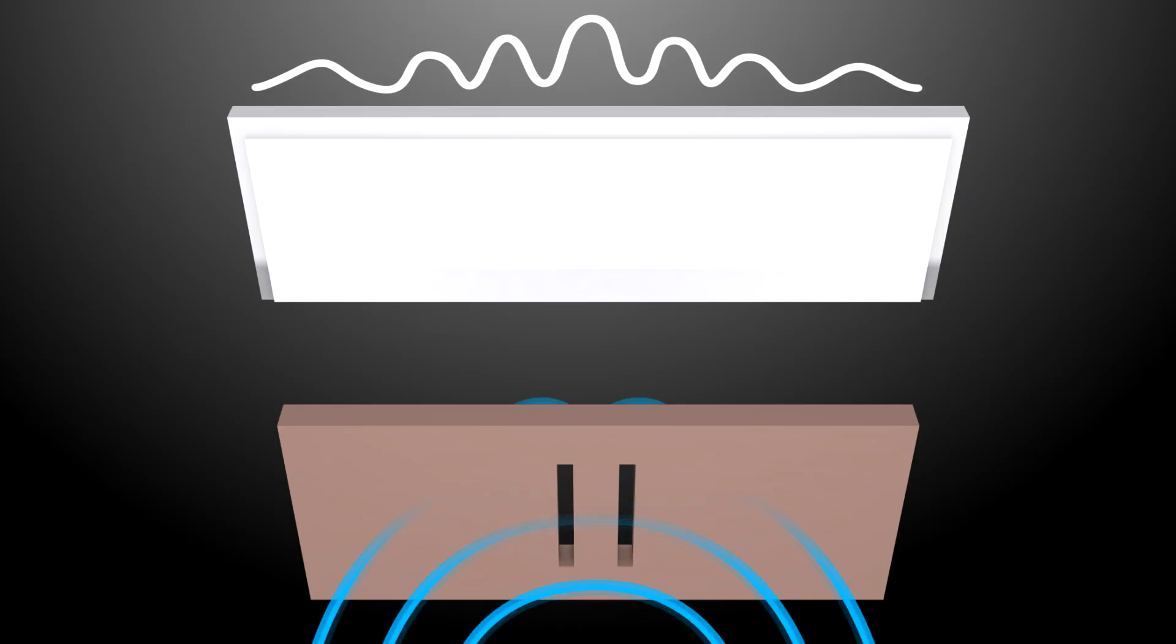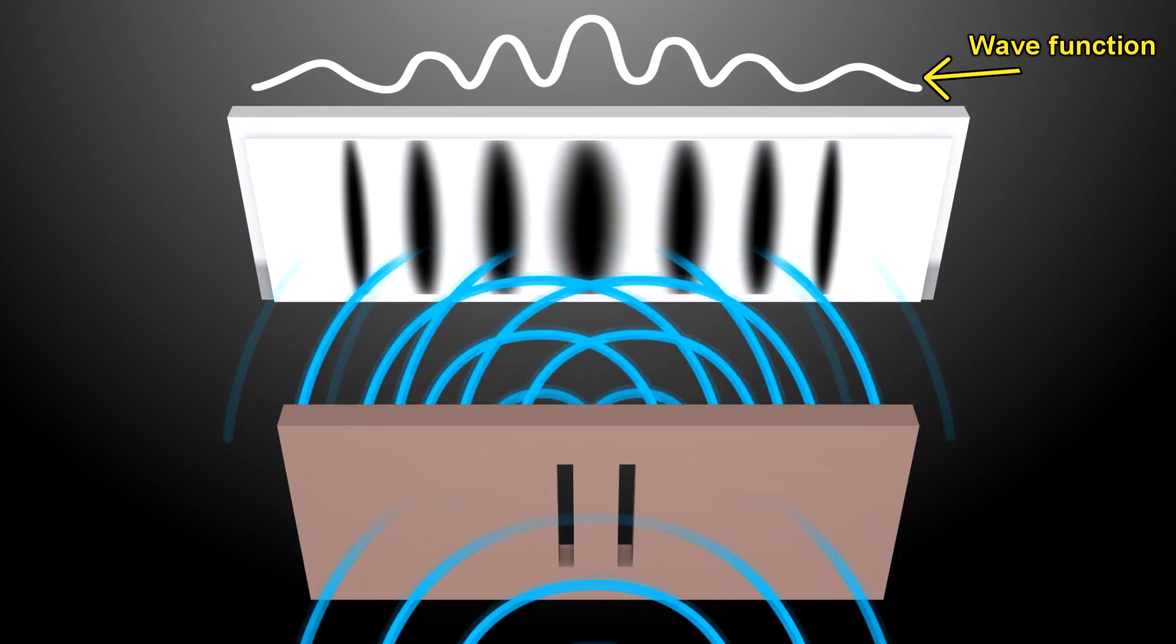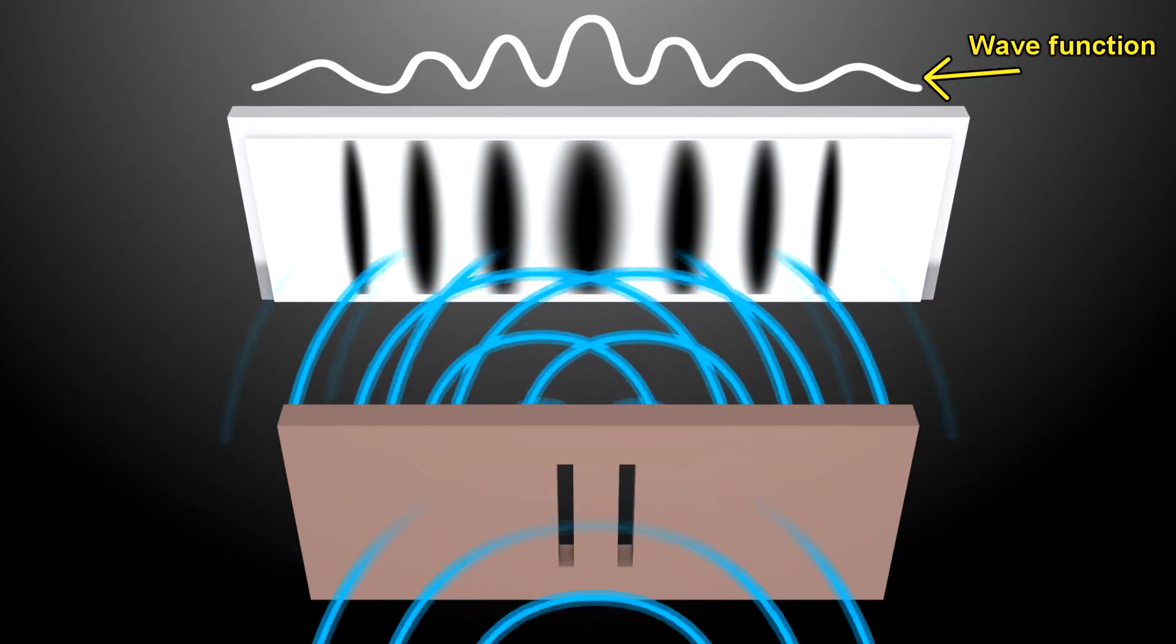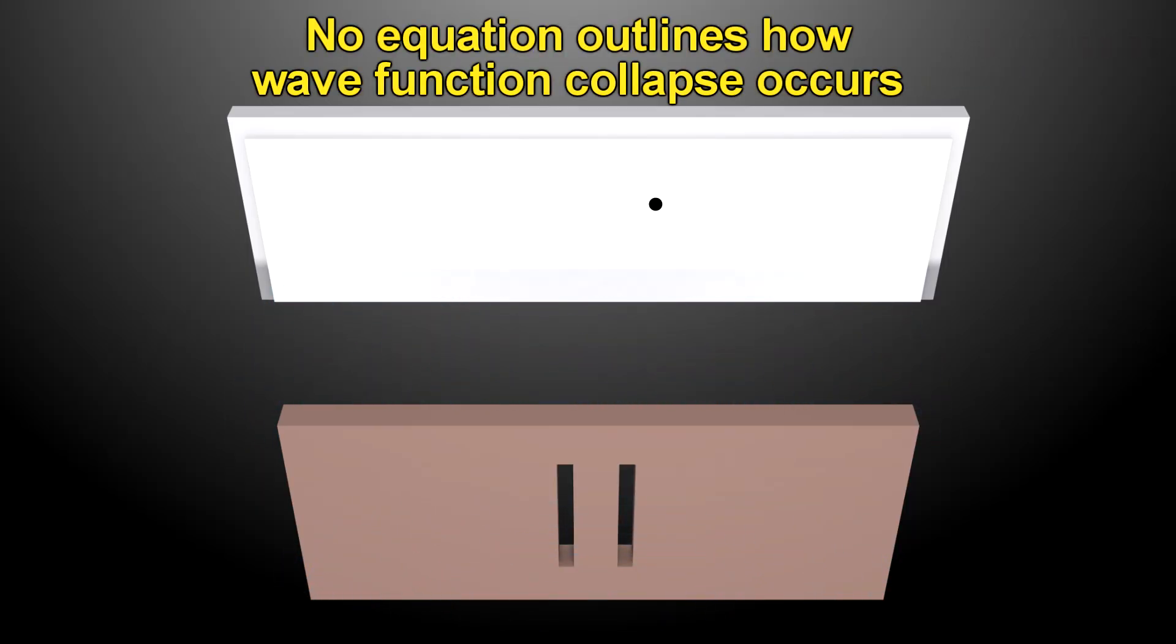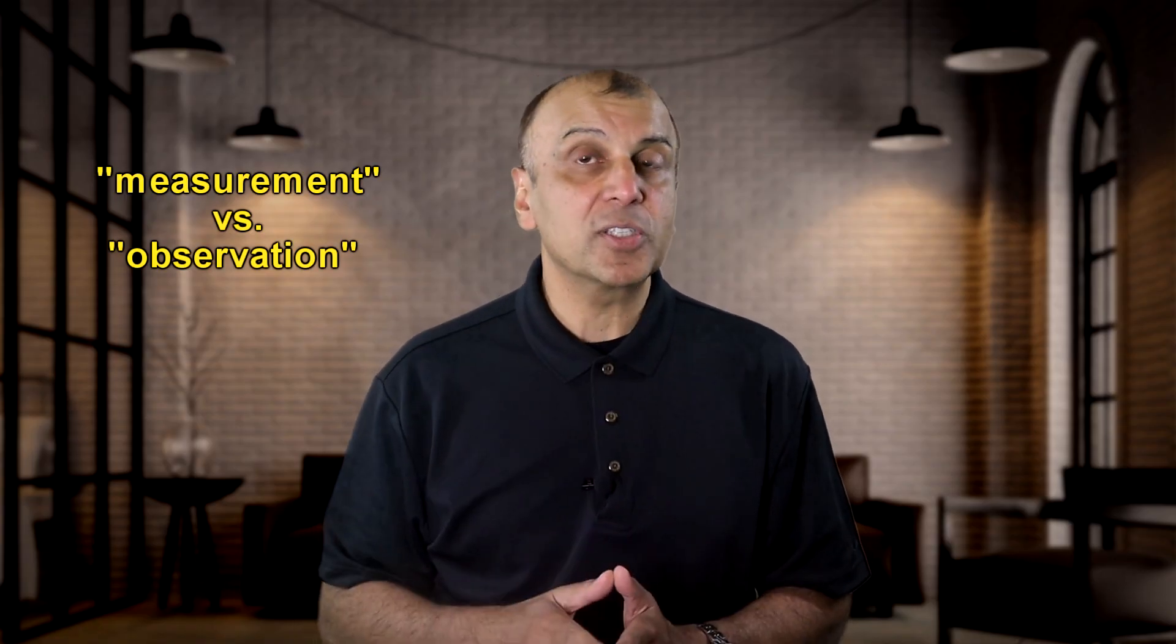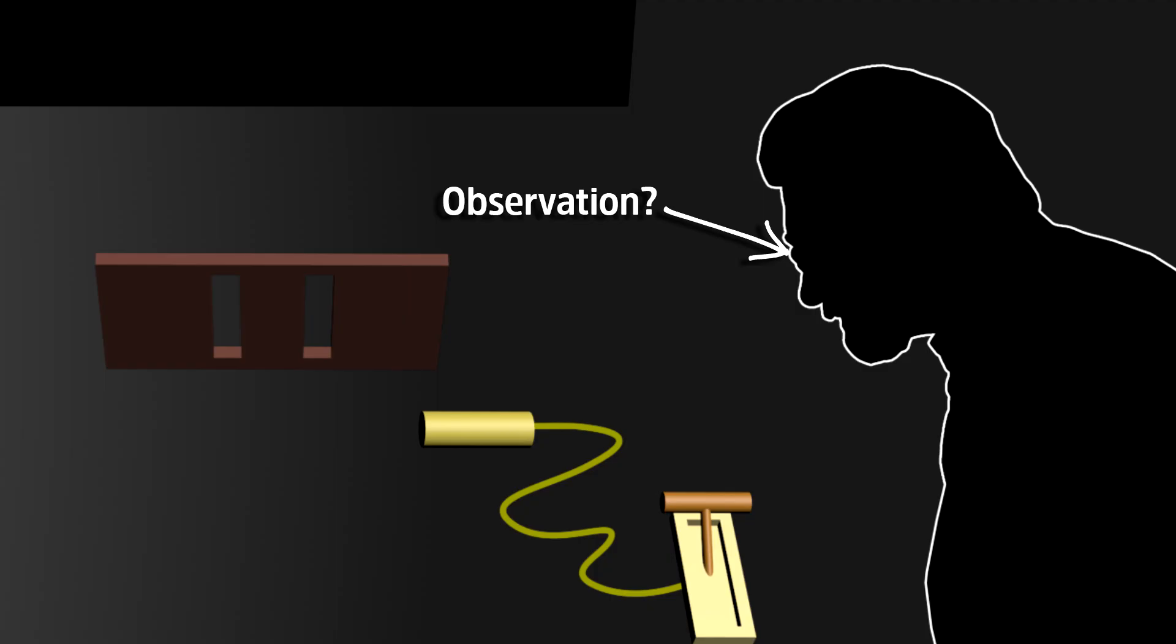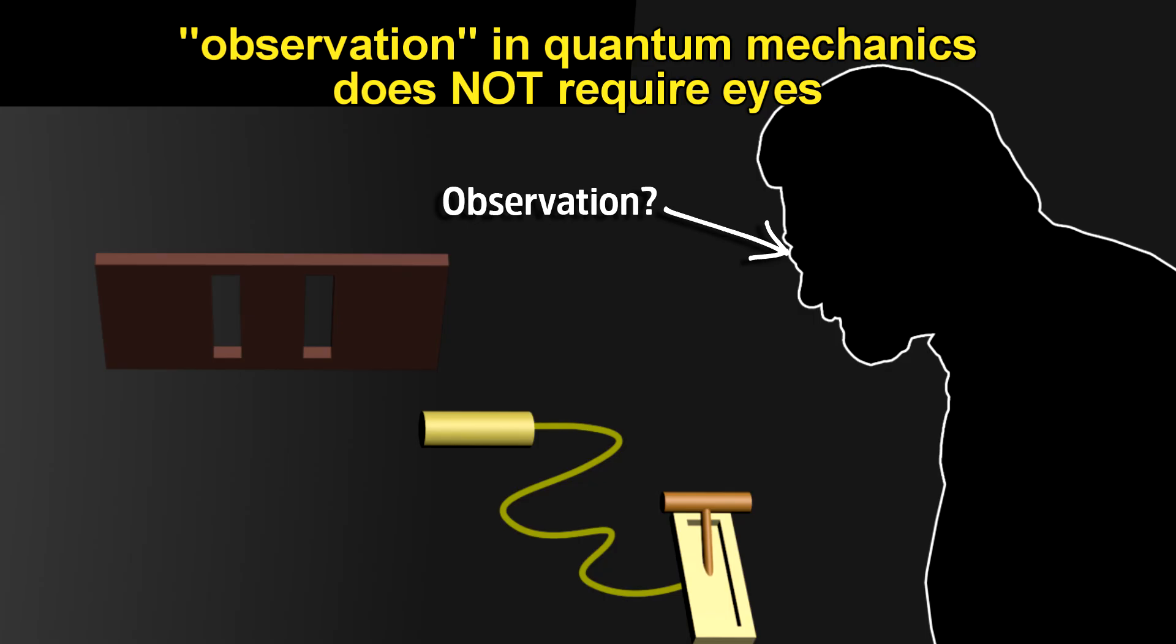And this so called collapse of the wave function is where the main confusion comes from, when it comes to quantum mechanics. There is no equation that outlines exactly how this collapse occurs after measurement. This has been called the measurement problem of quantum mechanics. I have been careful to use the word measurement instead of observation, which many textbooks and physicists use interchangeably. The problem with the word observation is that it implies looking with your eyes, which requires an observer, and a consciousness. But observation in quantum mechanics does not require eyes. It is simply a measurement.